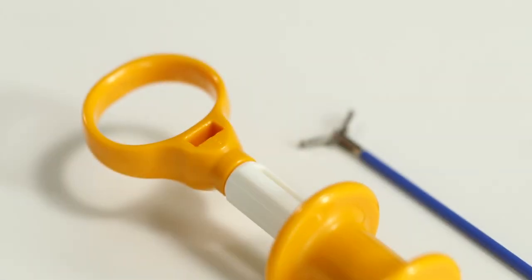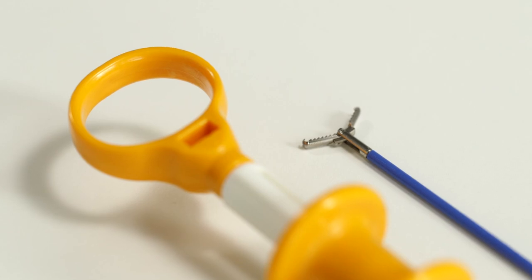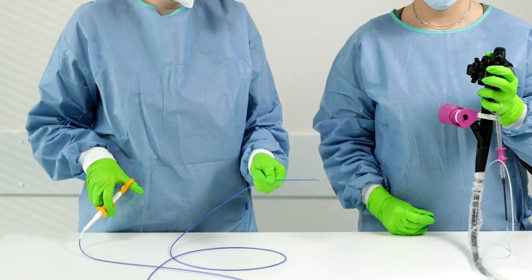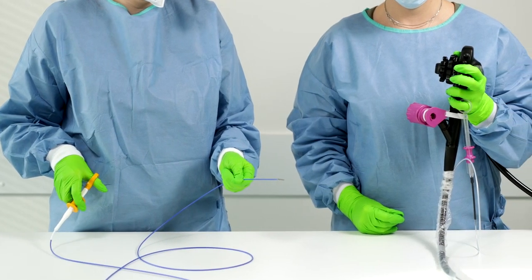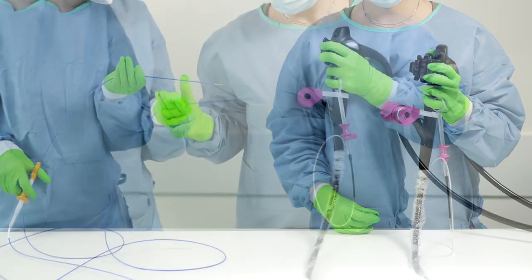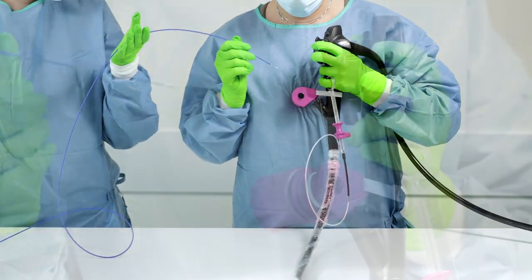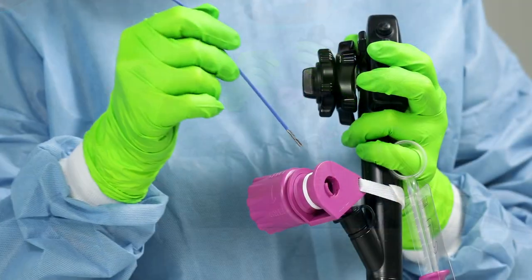While inserting the FTRD grasper into the working channel, it must be ensured that the thread remains slightly tensioned, otherwise it may wind itself around the instrument, making clip application difficult or even impossible.